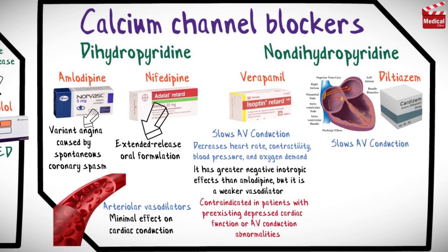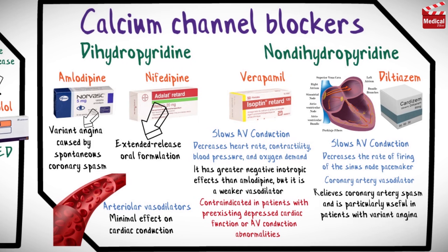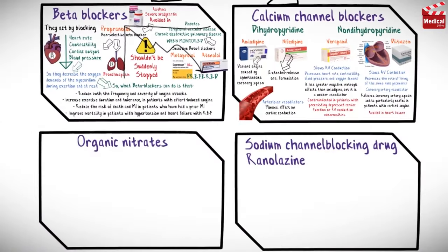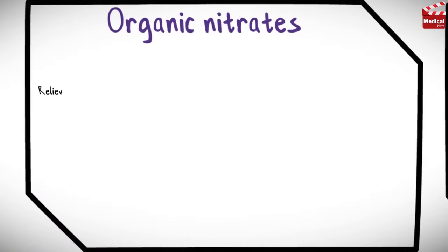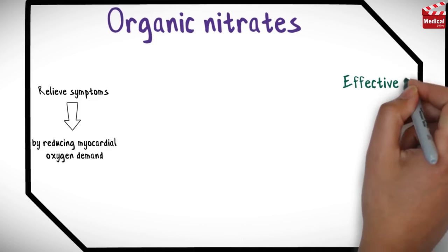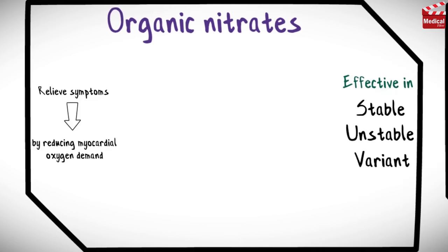Diltiazem slows AV conduction, decreases the rate of firing of the sinus node pacemaker, and is also a coronary artery vasodilator. It can relieve coronary artery spasm and is particularly useful in patients with variant angina. This category of drug should be avoided in heart failure as it can worsen the condition due to its negative inotropic effect. Overall, calcium channel blockers relieve symptoms by reducing myocardial oxygen demand and are effective in stable, unstable, and variant angina.